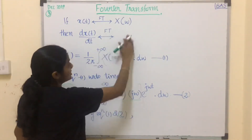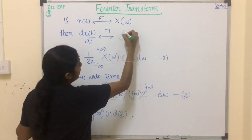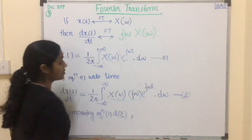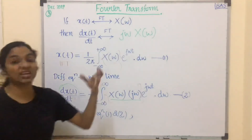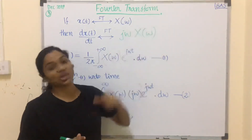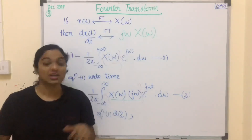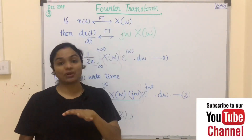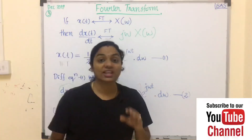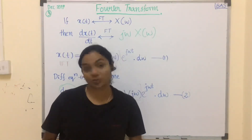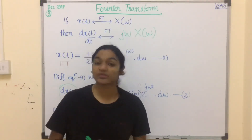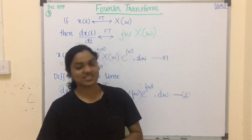This question mark can be replaced with jω · X(ω). Within these two steps we can easily find that the Fourier transform of dx(t)/dt is equal to jω · X(ω). This is the property of Fourier transform known as differentiation in time. We will see another example in the next lecture. Thank you.